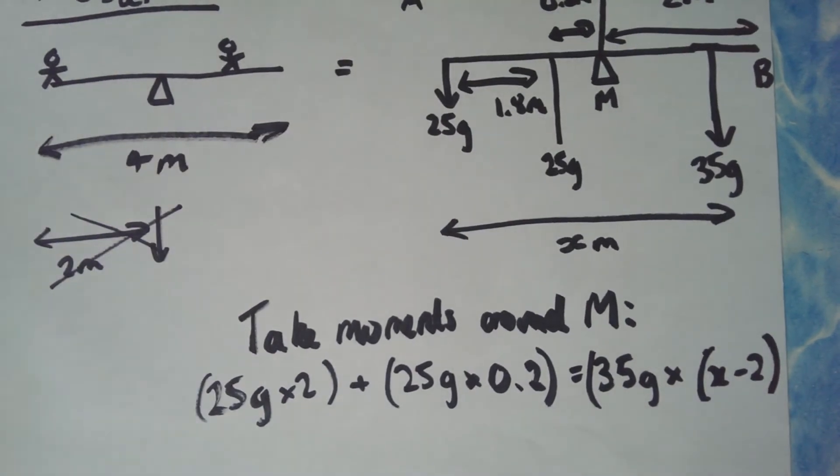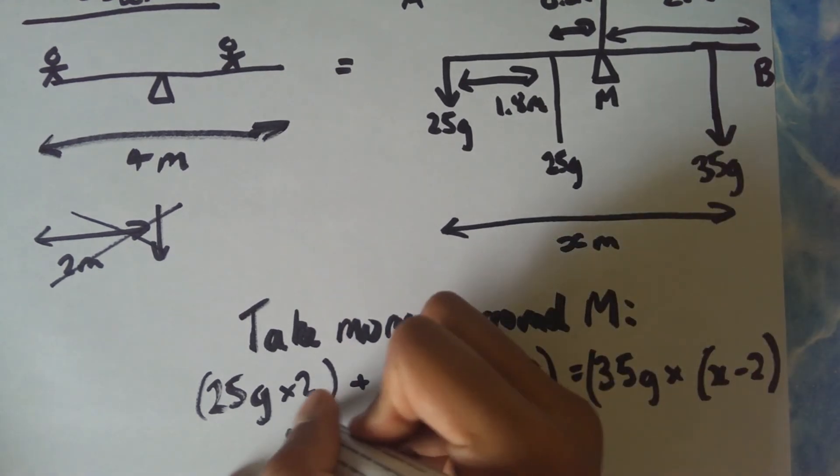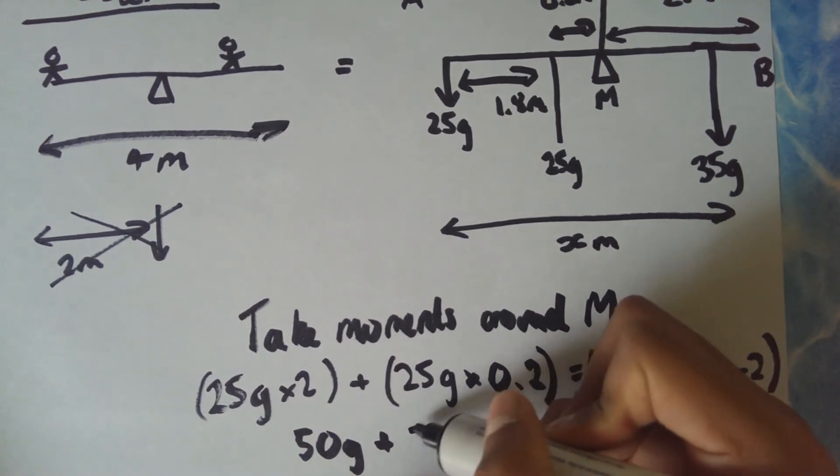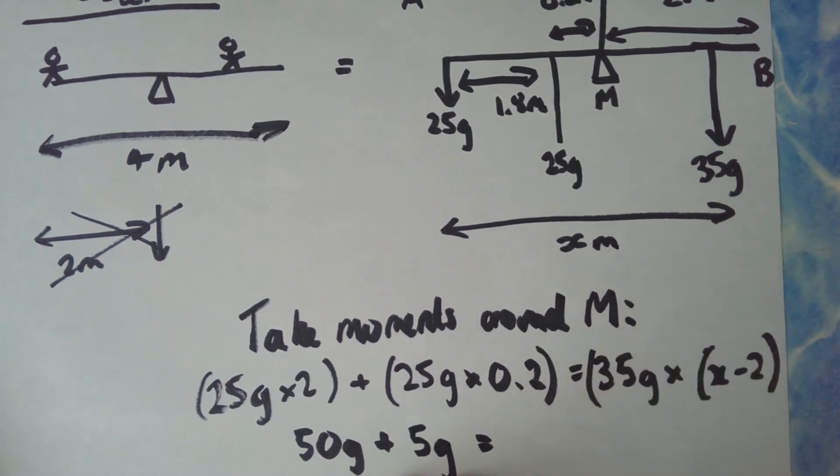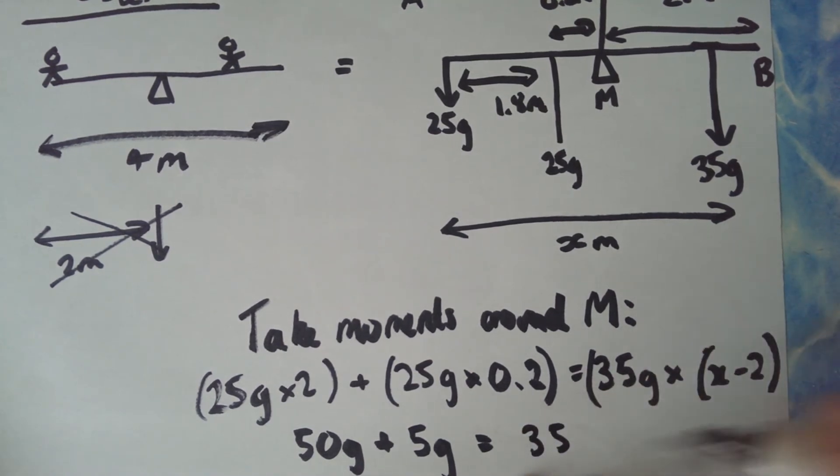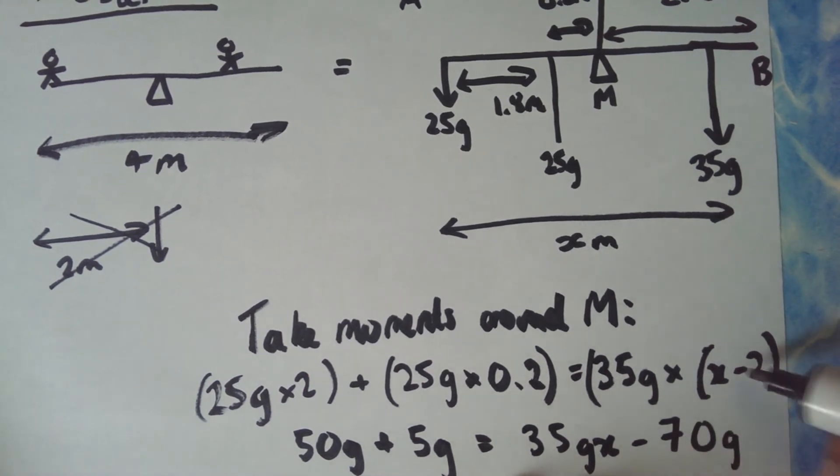Now if you go from using your calculator, which I should have on screen, you'll be able to see that this is equal to 50g plus 25 times - just turn my calculator on - 25 times 0.2 is 5, so 5g, equals 35 - you can say 35g times x minus also minus 70g, because minus 2 times 35 obviously. So I'll just go on to a new page here to finish off.